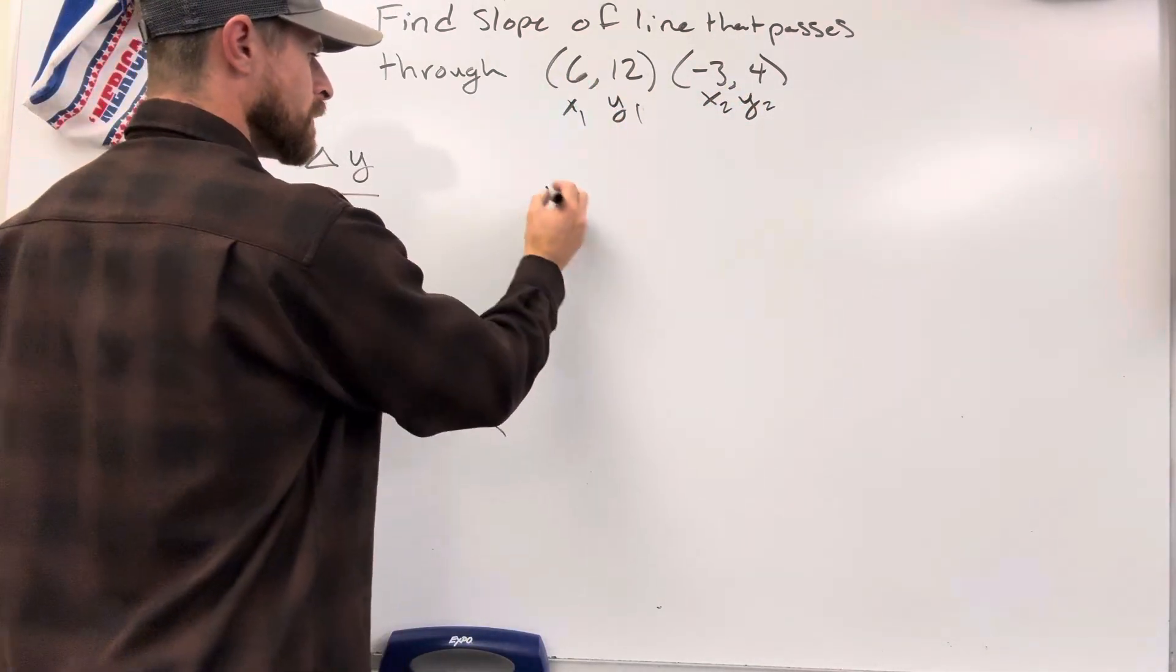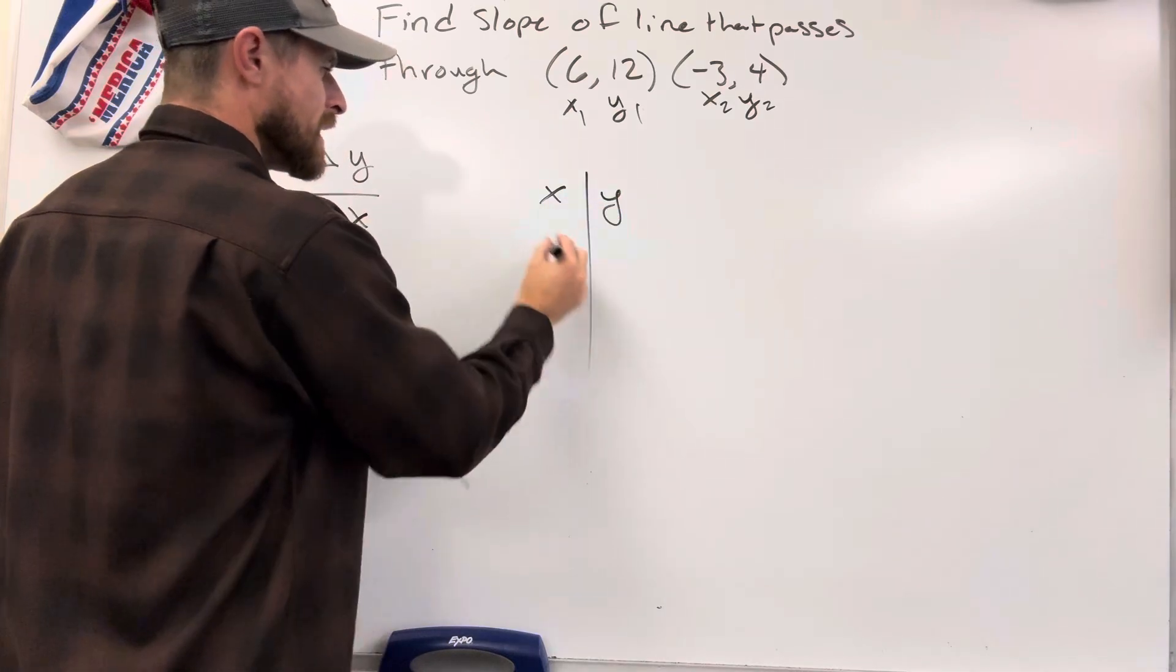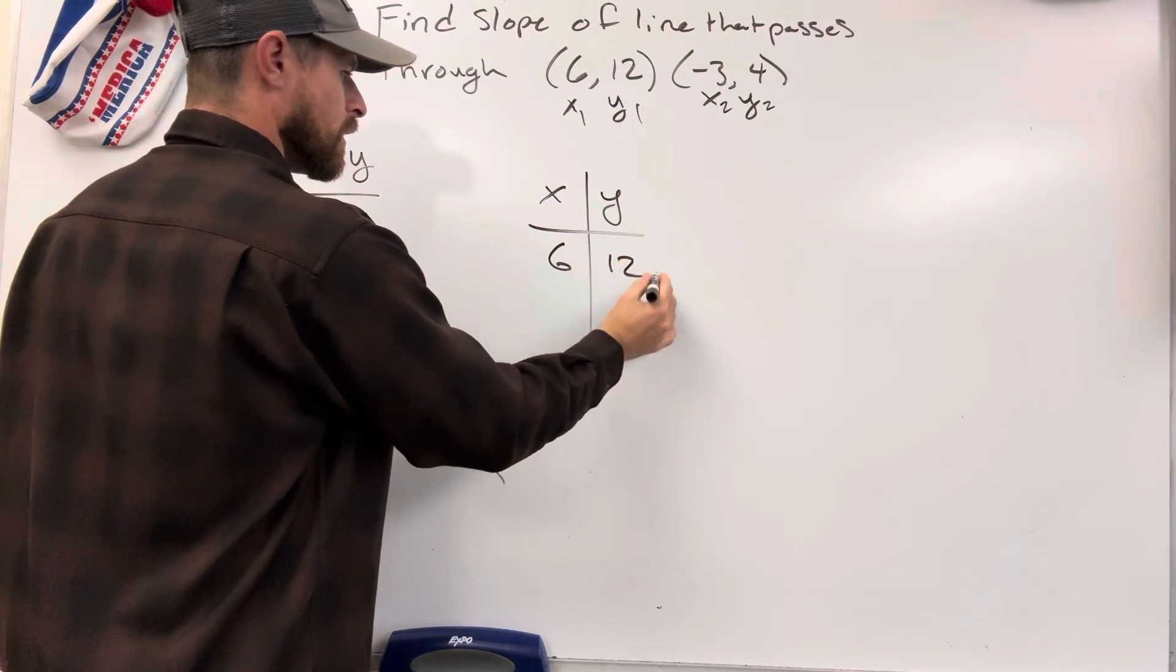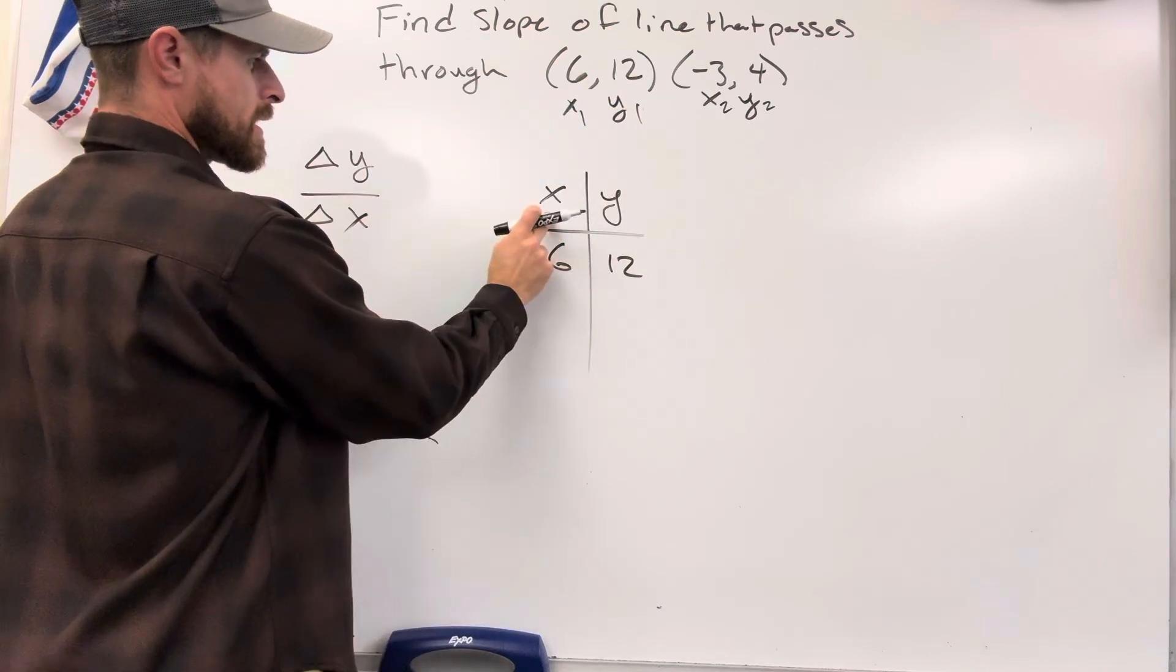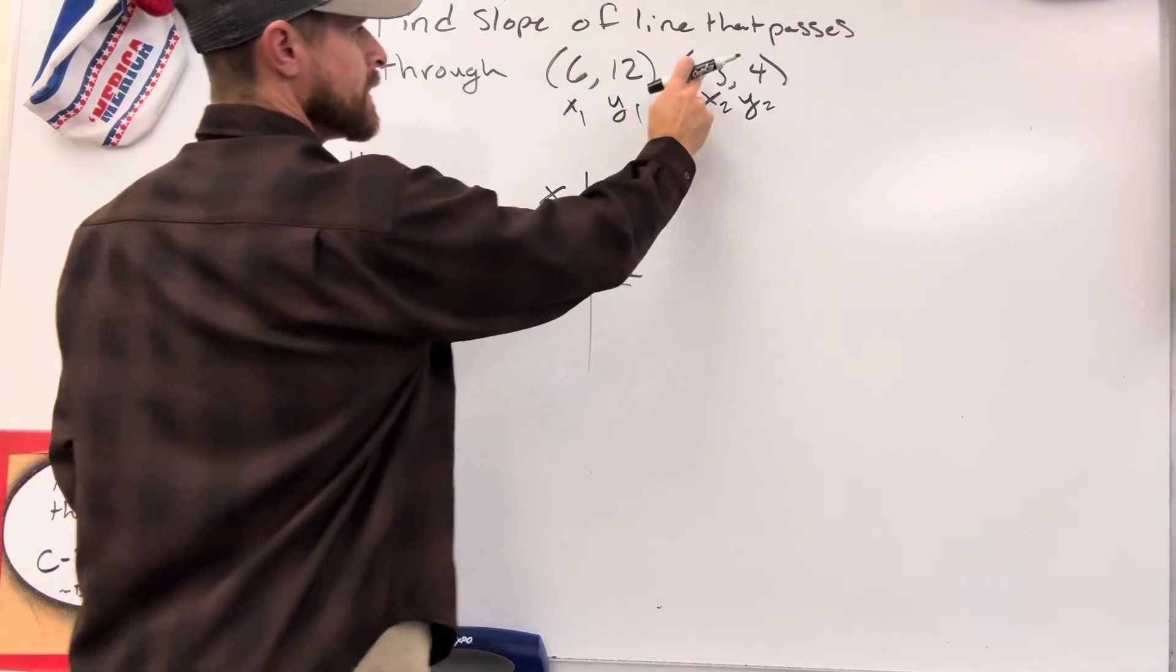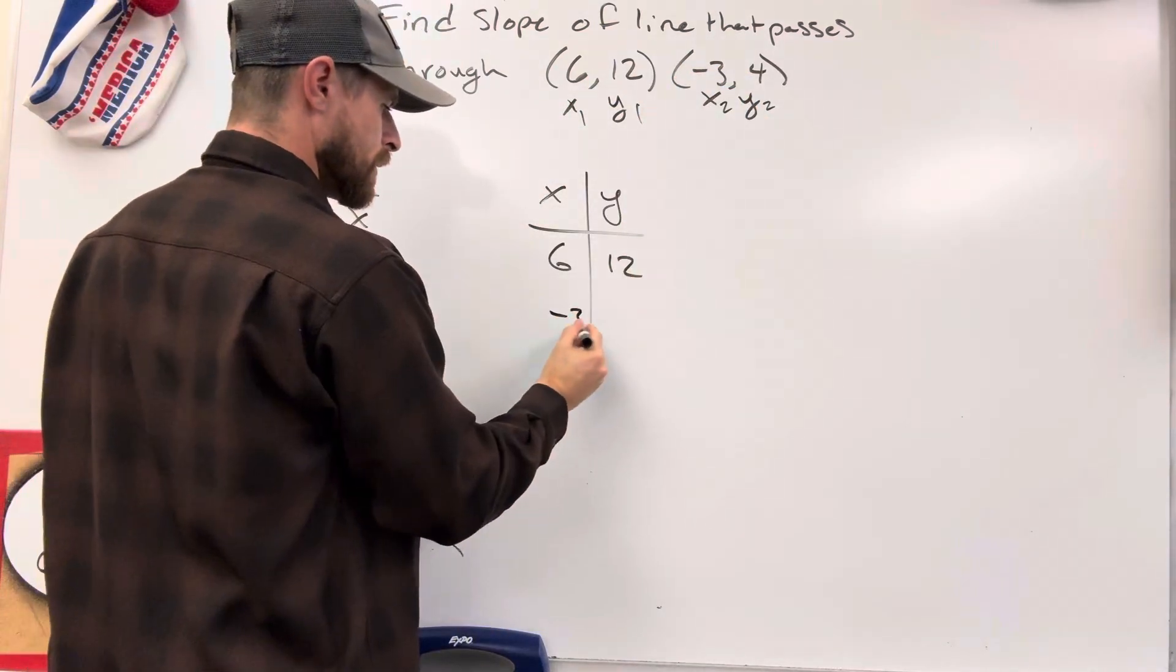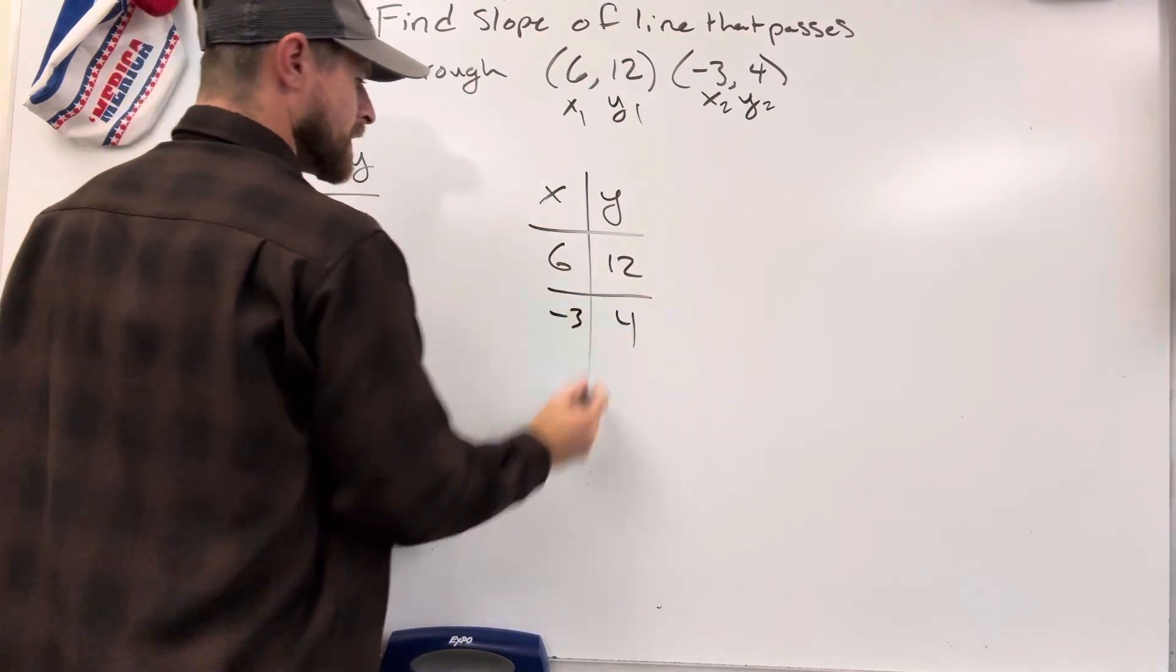Just take 6, 12, and put it into a table of values. 6, 12. 6, 12. 6 is the x. 12 is the y. Negative 3, 4. Negative 3, 4. Now, you've made a table of values.